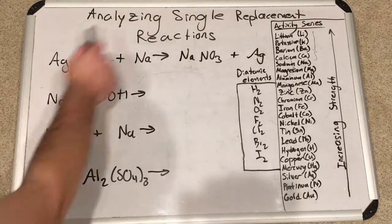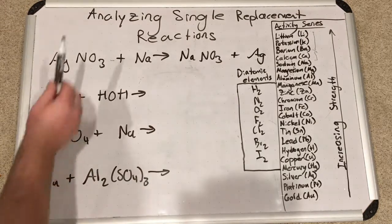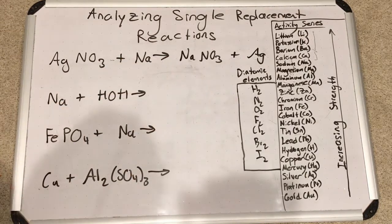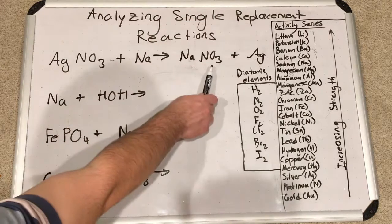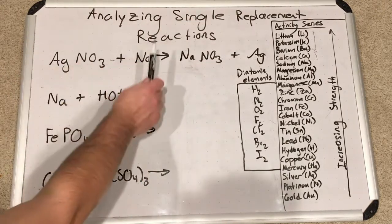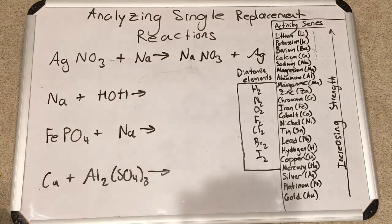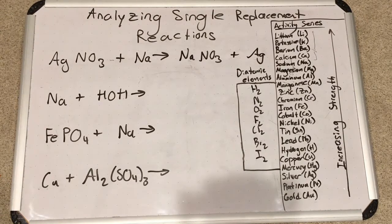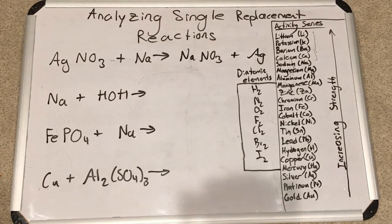One to one ratio. So let's check. So we've got one silver, one silver, that's done. One nitrogen, one nitrogen, that's done. Three oxygens, three oxygens, that's done. One sodium, one sodium. Okay, so that was fine, no problem there, totally balanced.